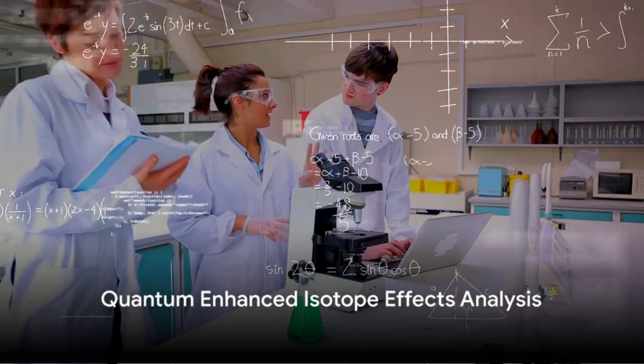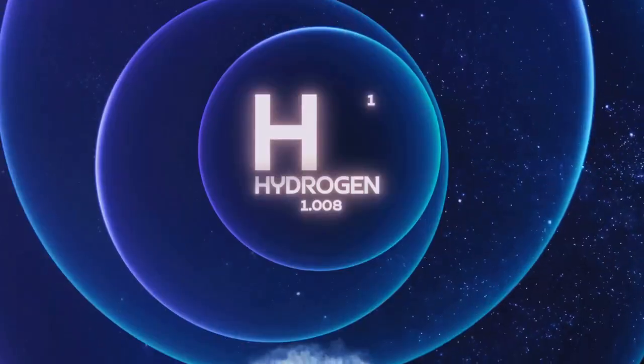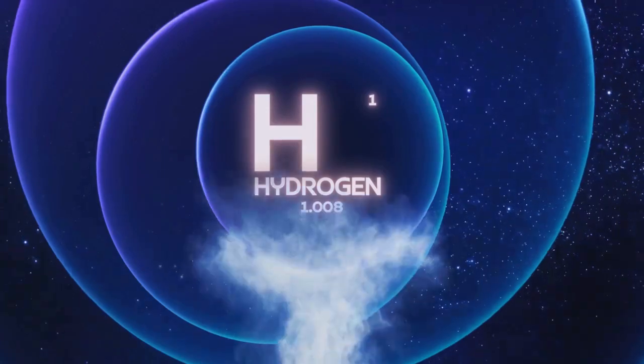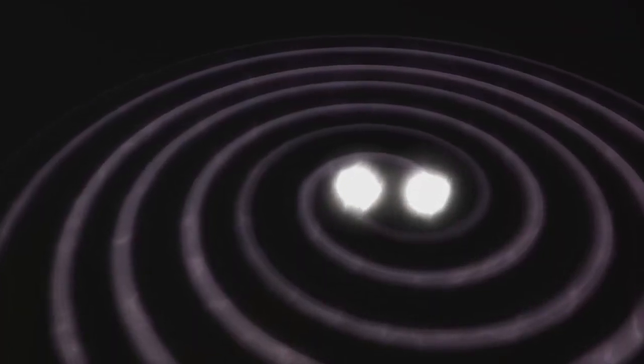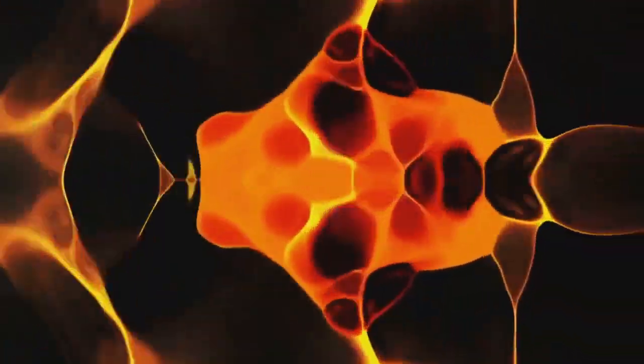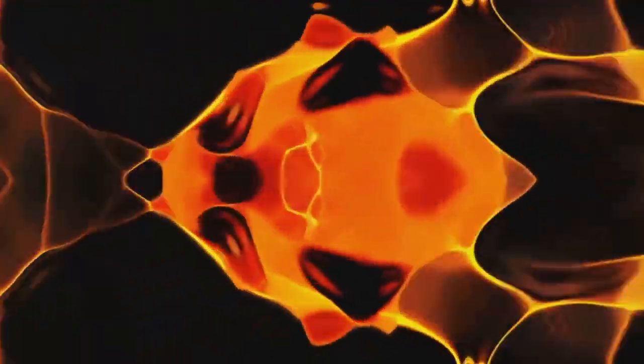The tenth algorithm is quantum-enhanced isotope effects analysis. This algorithm analyzes isotope effects on hydrogen splitting. It uses both PESFRACTAL and PESC-GRAVITY for isotope dynamics. The isotope effect analysis is given by the product of the fractal quantum field theory and the quantum gravity field theory.